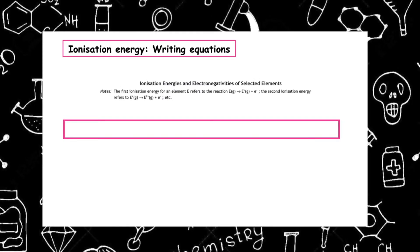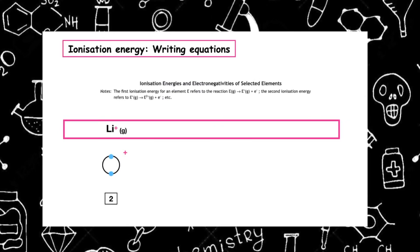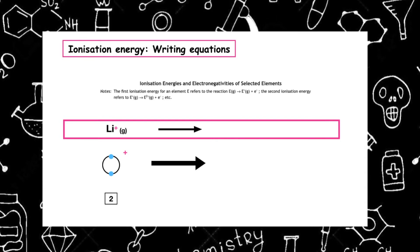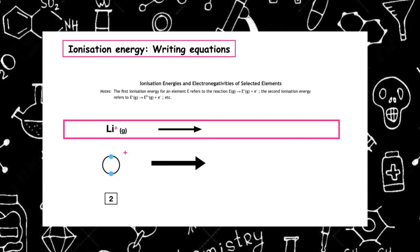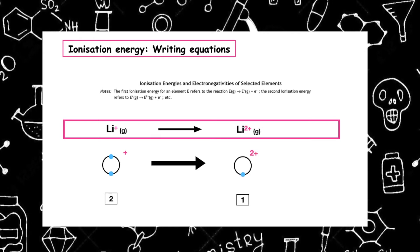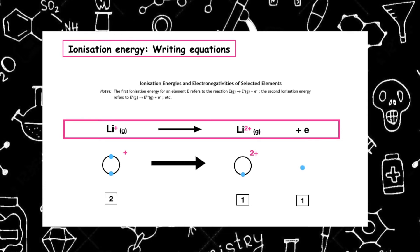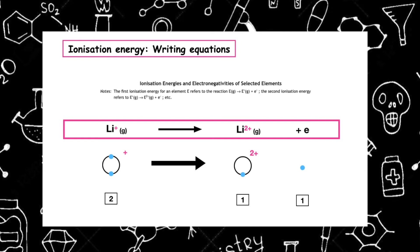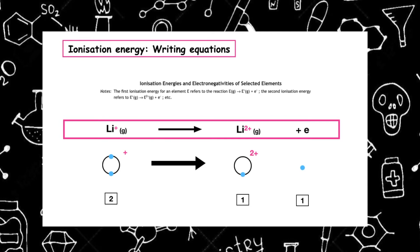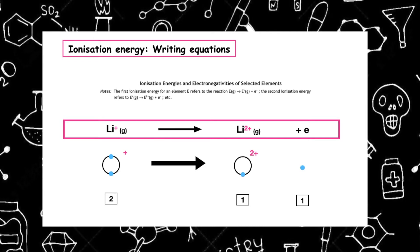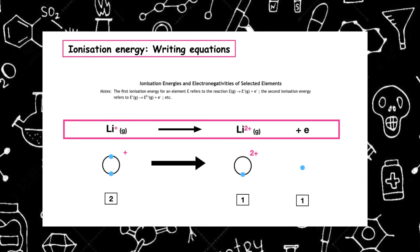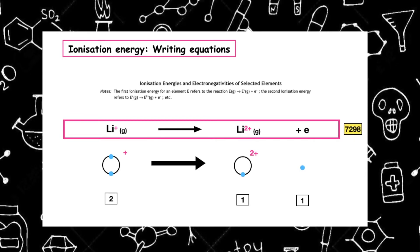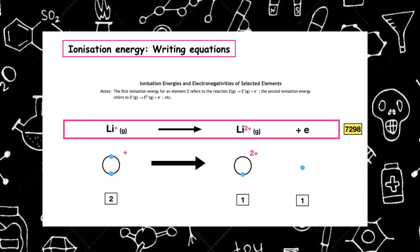If we repeat this process for the second ionization energy of lithium, we take the lithium ion that was produced after removing the first electron. We want to remove a second electron, which would produce Li²⁺(g), and we need to remember to keep that in the gas state. On the left hand side there is a total of two electrons, and on the right hand side there is also a total of two electrons. The second ionization energy is 7298 kJ per mole, which is significantly higher than the first ionization energy.